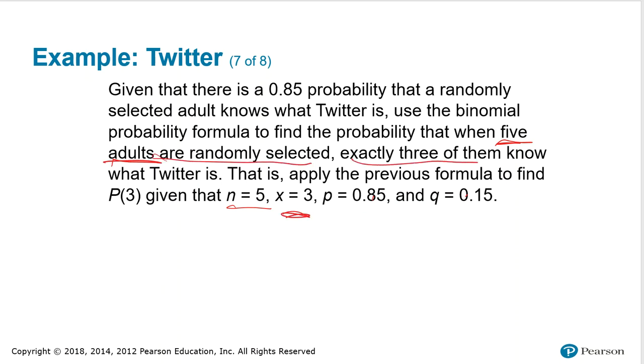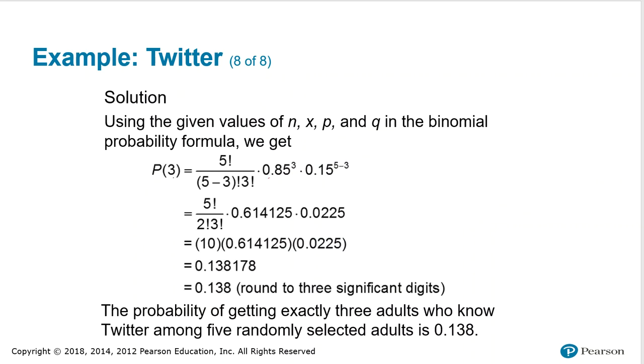x is three, exactly three of them know what Twitter is. The probability they know what Twitter is was given in the beginning, and the probability they don't know what Twitter is, which is little q, is one minus p, so that gives you the .15.